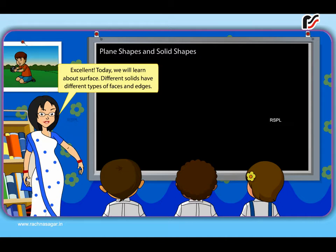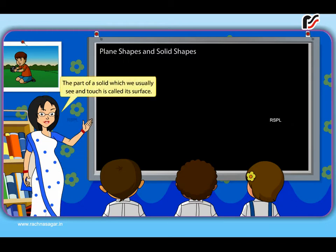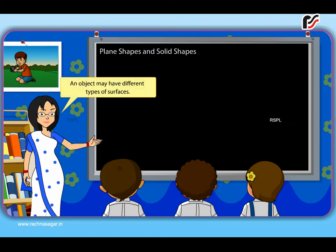Today we will learn about surface. Different solids have different types of faces and edges. Ma'am, what is surface? The part of a solid which we usually see and touch is called its surface. An object may have different types of surfaces.